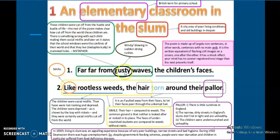The line starts with 'far far from gusty waves,' gusty meaning strong powerful waves, winds. 'The children's faces.' Full stop. The faces here are away from the gusty waves. If you read this paragraph, these children are cut off from the hustle and bustle of life. The rest of the poem makes clear how cut off from the world these children are. Cut off from what? Cut off from development, cut off from a normal growth. There is something wrong with the children making them social misfits.